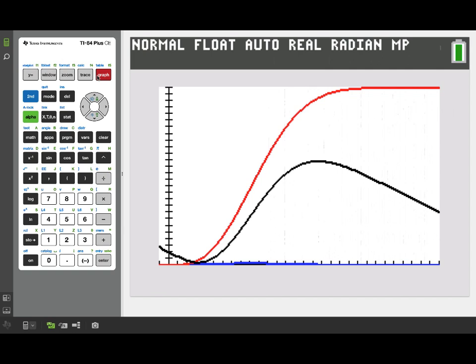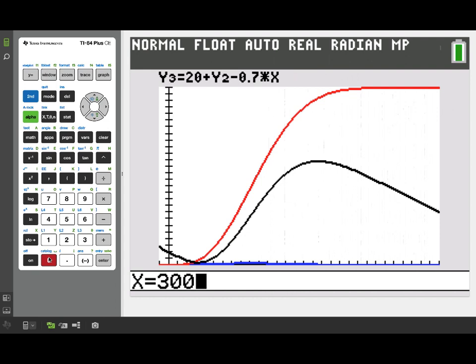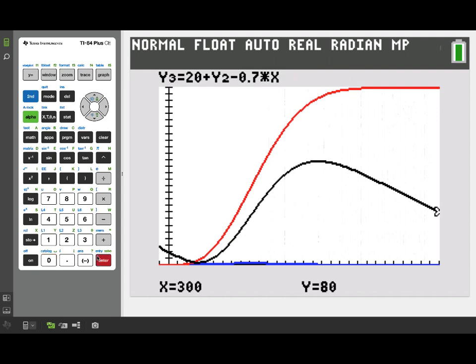If I turn on the trace for this black graph, we can take a look at the total number of people in the line at any time x. Now we were asked what was the total number of people in the line at time 300. So we can jump to 300 and check that out. I've typed in 300 and we jump over and see there's 80 people in the line at that time.